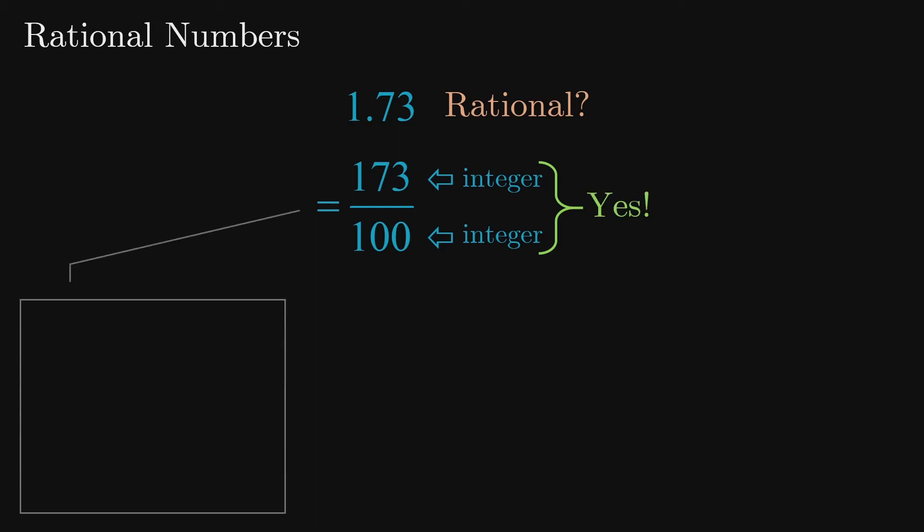To arrive at this result we could use the fact that division by 100 ultimately moves the decimal point back two places. Alternatively we could start by writing 1.73 as a fraction with a denominator of 1. We know that multiplying both the numerator and denominator by the same non-zero number does not affect a fraction's value.